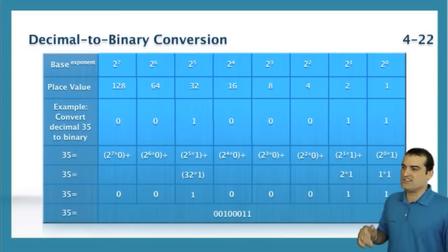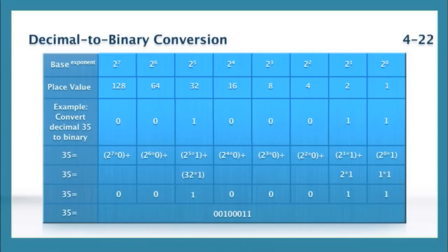And notice we have solved it. So 35 converted to binary is 0, 0, 1, 0, 0, 0, 1, 1. So when we have 35 in an octet of an IP address in our standard dotted decimal notation, then that is seen by the computer as 00100011.